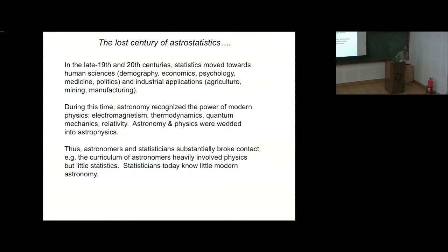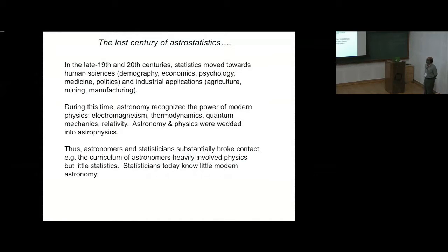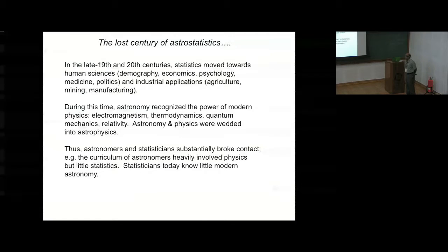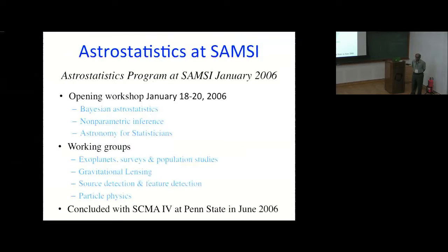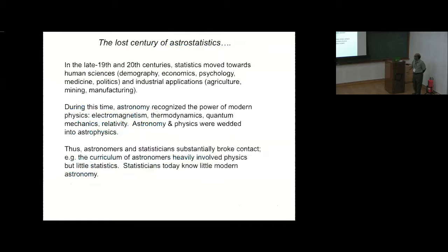In the last century, these two fields diverged quite a bit. Statisticians were pulled towards biostatistics because of applications in medicine and industrial applications. During the same period, astronomers recognized the power of modern physics — electromagnetism, thermodynamics, and so on — and they became astrophysicists. So these two fields diverged considerably, until the middle of the last century when people started thinking about using statistics in astronomy again.